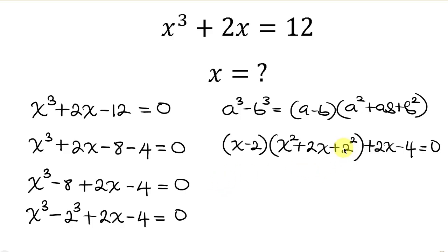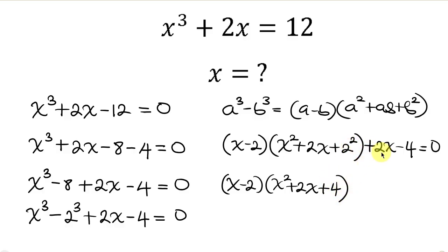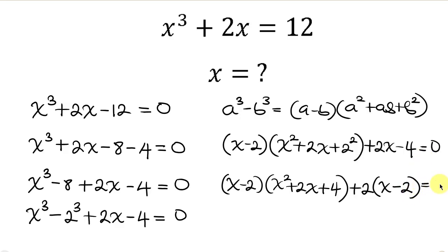Let's simplify what we have inside the bracket. We have (x minus 2)(x squared plus 2x plus 4). Then notice that 2 is common from the remaining terms, so we can factor out 2, giving us 2(x minus 2), equal to 0.